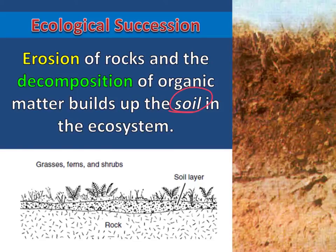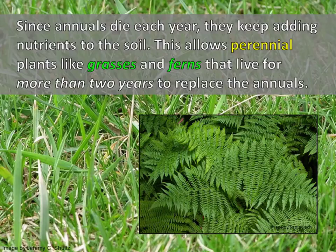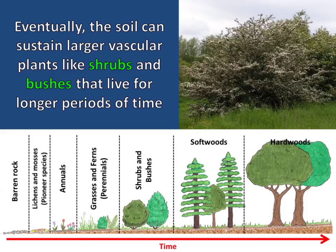Creating and improving this layer of soil is a key process in ecological succession. The formation of fertile soil allows plants called annuals to replace the pioneer community. These plants only live one year, and each year a new population germinates, flowers, and dies. Since annuals die each year, they keep adding nutrients to the soil. This allows perennial plants like grasses and ferns, that live for more than two years, to replace the annuals.